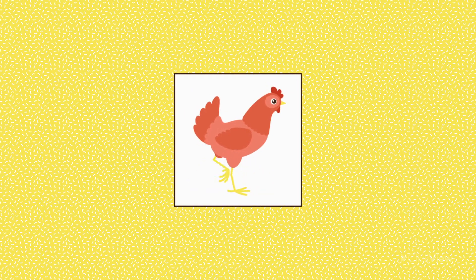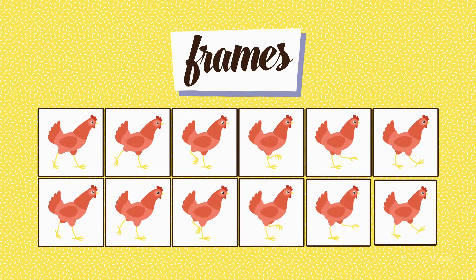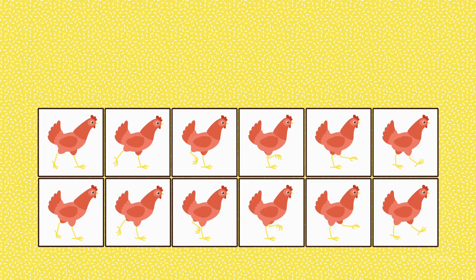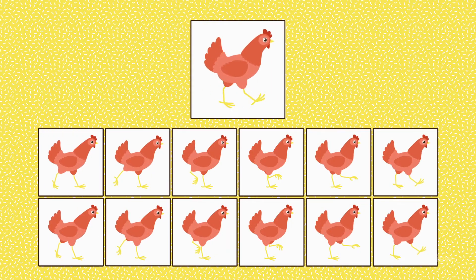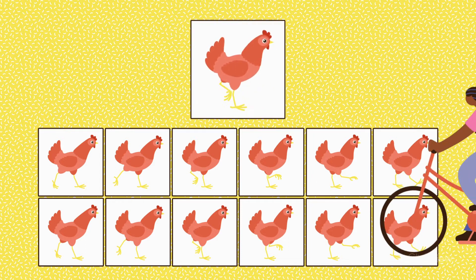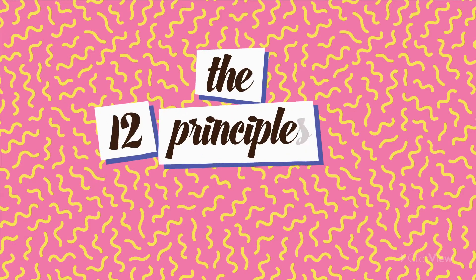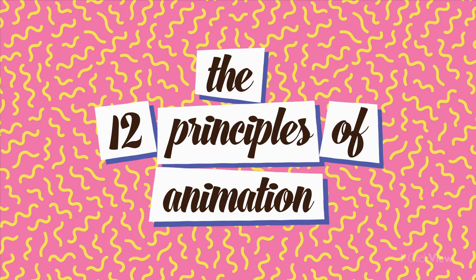How do animators bring still pictures to life? In animation, we call every still image a frame, and movement is created by stitching frames together. The more frames per second, the smoother the motion will look. However, to make their animations more believable and appealing, animators also follow a set of guidelines called the 12 Principles of Animation. Let's have a look at each one of them.